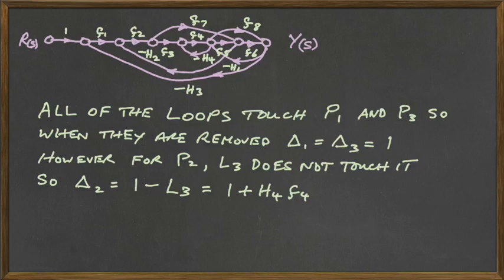But for path two, the L3 does not touch it. And as you can see, once again, if we point it out up here, the path that goes above here and comes around completely escapes these branches inside here. So this loop actually does not touch this forward path. So for path forward two, path two of the forward paths, this path in here, minus H4, G4, does not touch it at all.